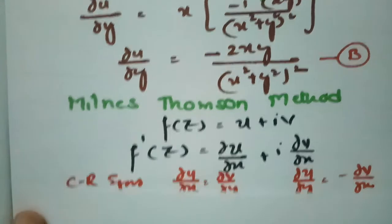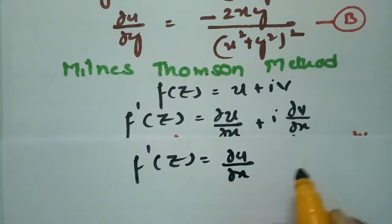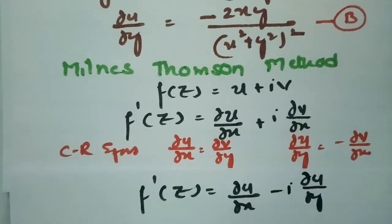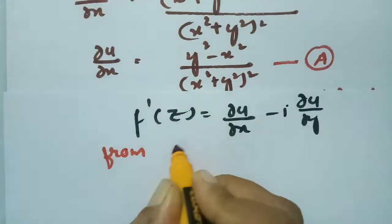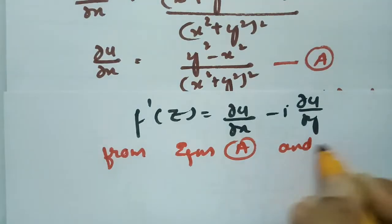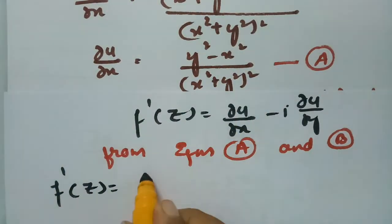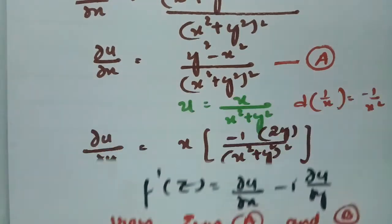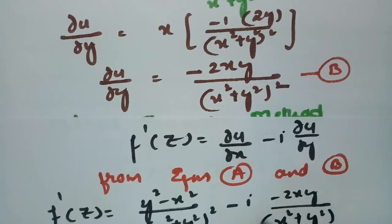Therefore f'(z) is transformed as f'(z) = ∂u/∂x + i·(-∂u/∂y). Substituting from equations (a) and (b): f'(z) = (y²-x²)/(x²+y²)² minus i times (-2xy/(x²+y²)²).